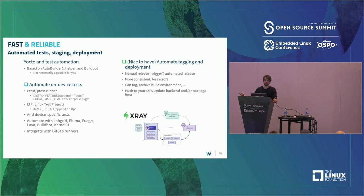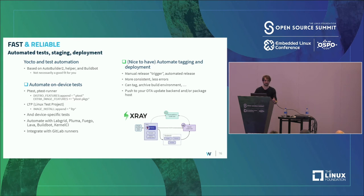Finally, if you can, automate the deployment — tagging your release, archiving, and deploying to your OTA backend. The fewer manual steps, the less work and less risk for error, so you'll have a more consistent build output.